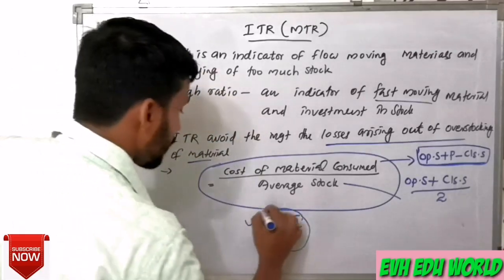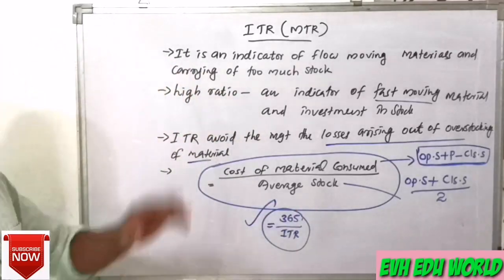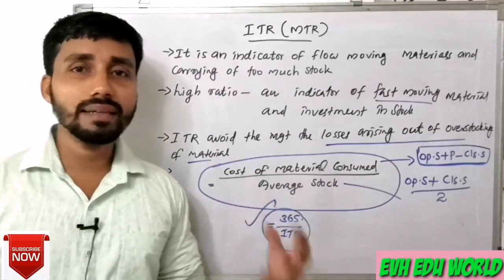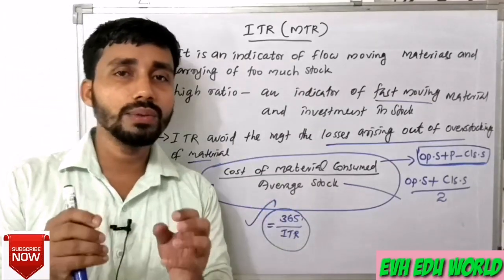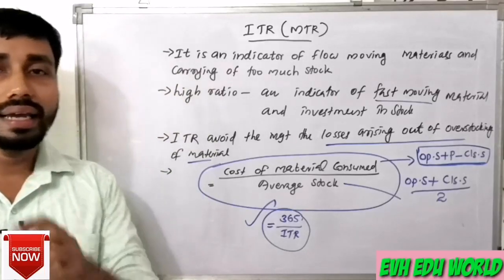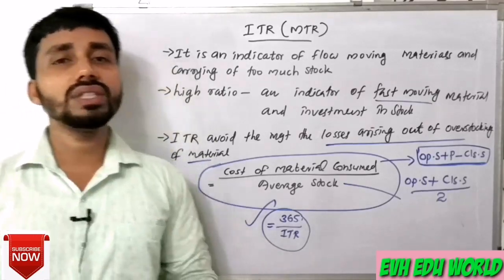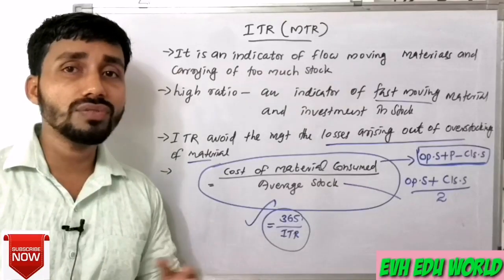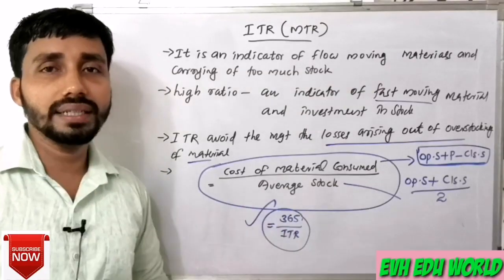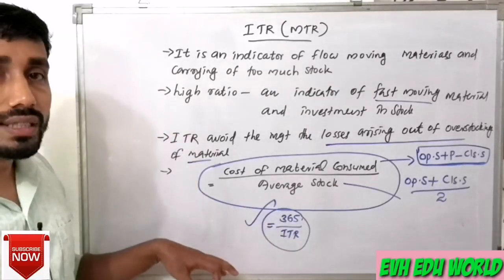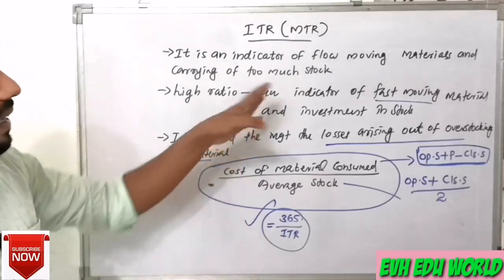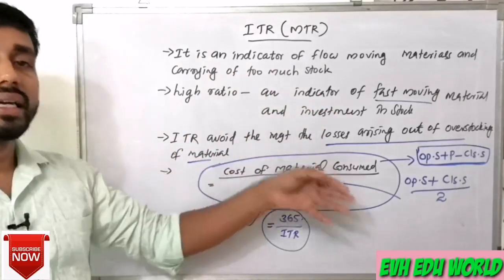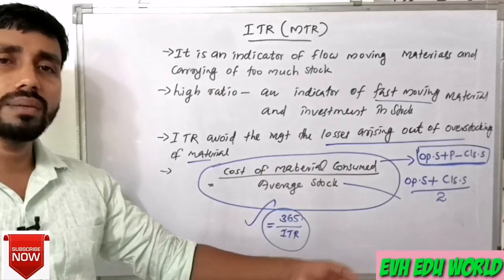The material turnover ratio is an attempt to reduce the investment in stock and to improve the efficiency of material management. It is an indicator of the flow of moving material. A high ratio indicates fast-moving material, while a low ratio is an indicator of slow-moving material.